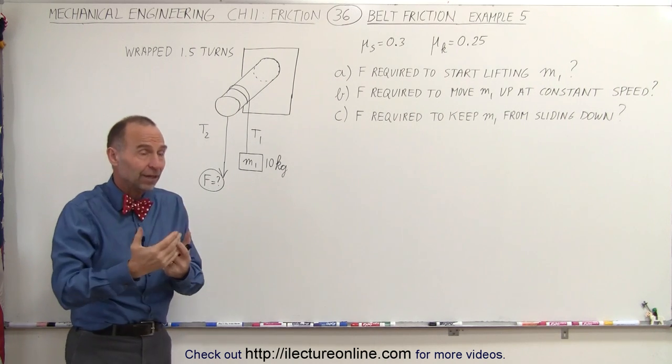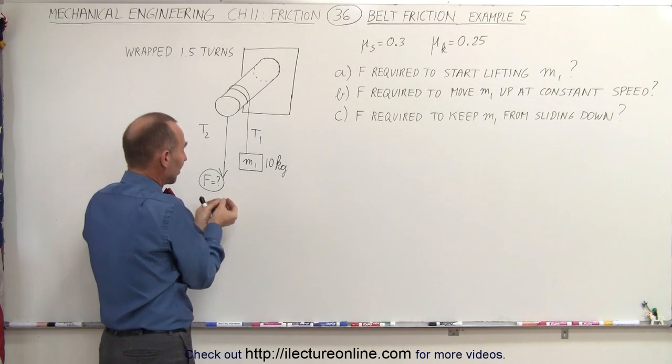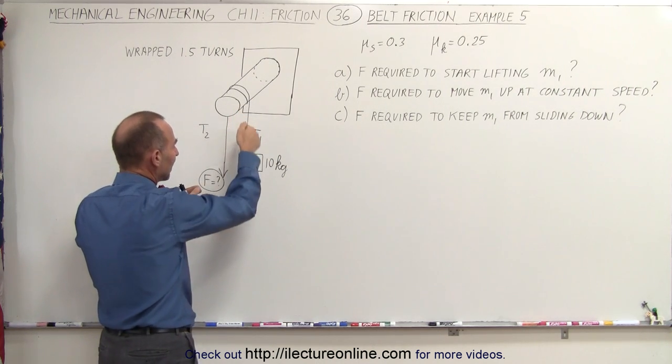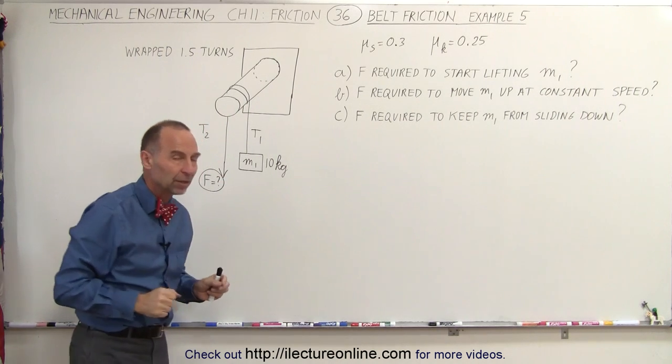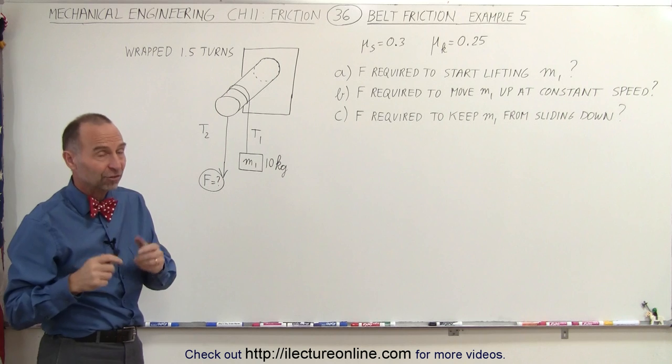And finally, what if we reverse things and we allow M1 to slide down or at least keep it from sliding down? What's the force required on this side to keep M1 from sliding down? For all three, we're going to use the same equation.